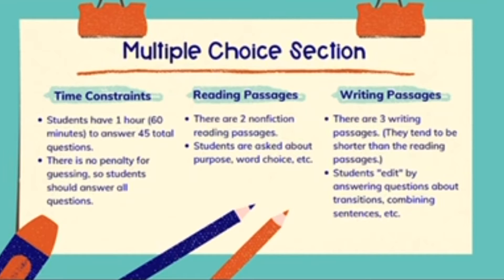However, just like other standardized tests, there are usually a couple of answer choices you can immediately eliminate because they're not relevant or clearly misrepresent the passage. As far as the passages themselves, there are two reading passages — these tend to be longer nonfiction passages with more questions — and three writing passages, which are shorter with fewer questions. So approximately half the multiple choice is based on reading, and the other half is based on writing.